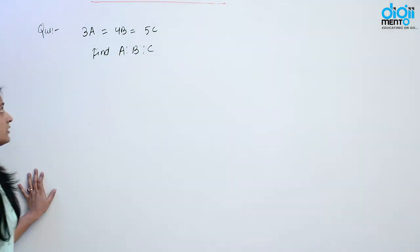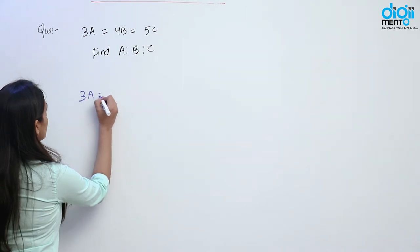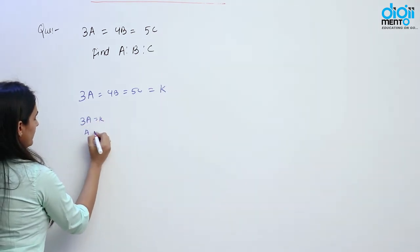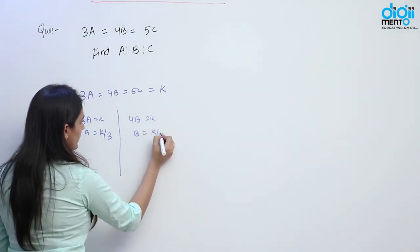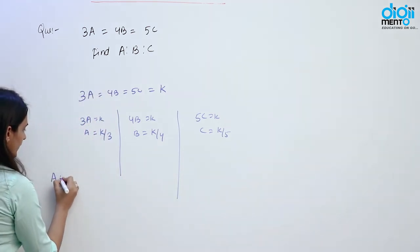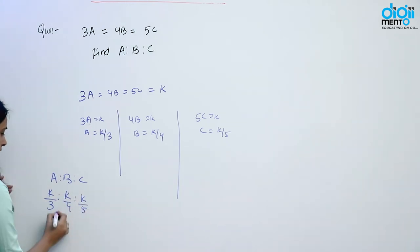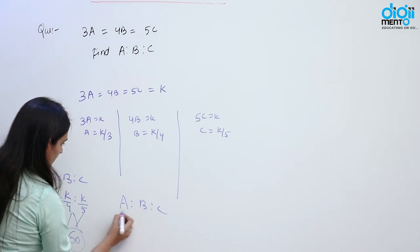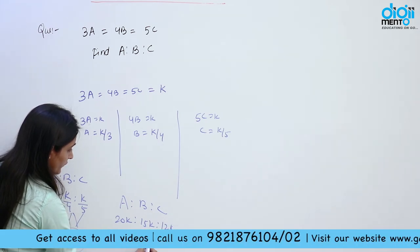Now the next question is 3A is equal to 4B equal to 5C. We have to find A ratio B ratio C. First of all write 3A equal to 4B equal to 5C and take it equal to a variable K. Now 3A must be equal to K, so A is equal to K by 3. Similarly 4B equal to K means B must be equal to K by 4. Similarly for C. Now the ratio of A ratio B ratio C is equal to K by 3, ratio K by 4, ratio K by 5. Take the LCM of 3, 4, 5 which is 60. Divide 60 by 3, 4, and 5. We get A ratio B ratio C that is 20K, 15K, 12K, and you can say 20 ratio 15 ratio 12.